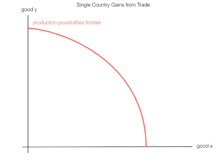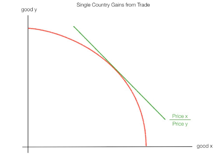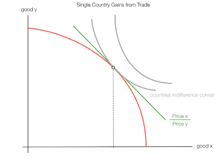I'm going to use the production possibilities frontier. If you don't understand the production possibility frontier concept, there are other videos that explain it. If you look at the price of X divided by the price of Y, it intersects with the production possibility curve at the point where it's tangent. When I add an indifference curve, the country will produce at that gray point right there.